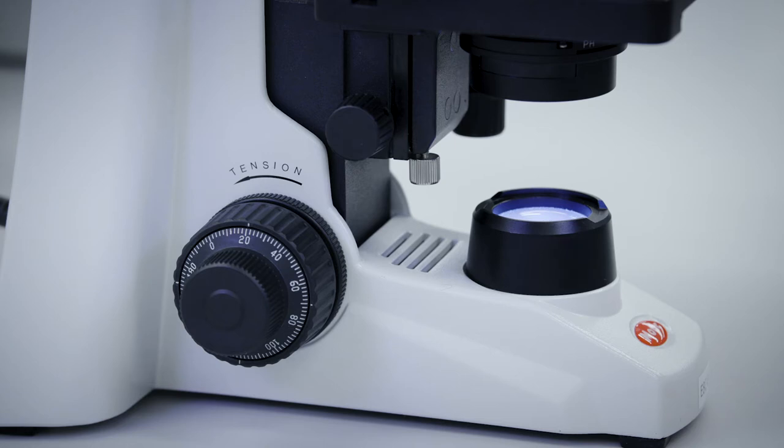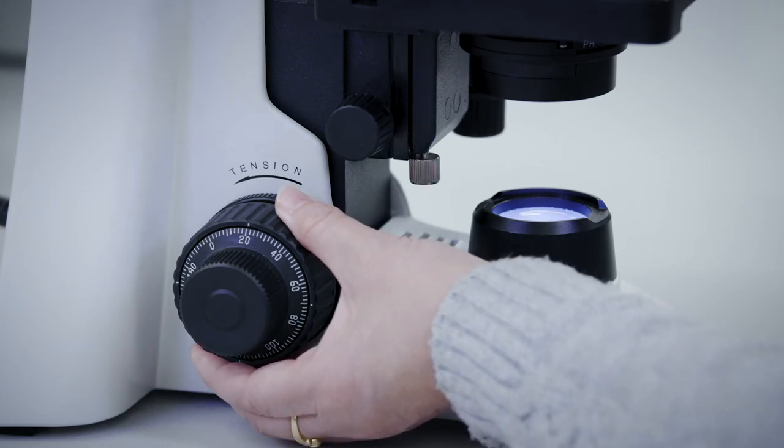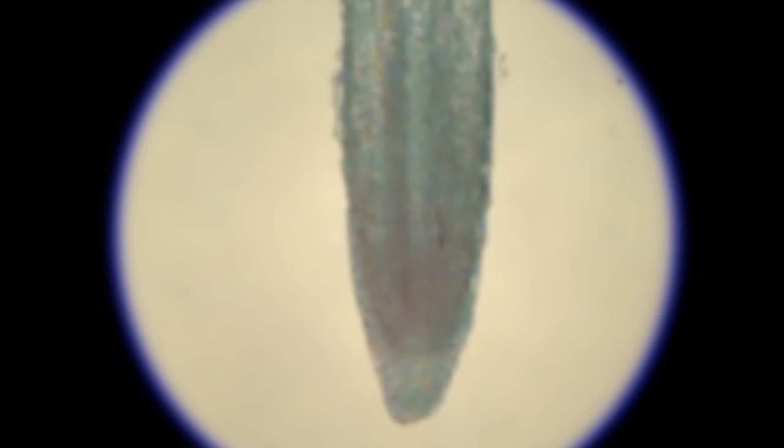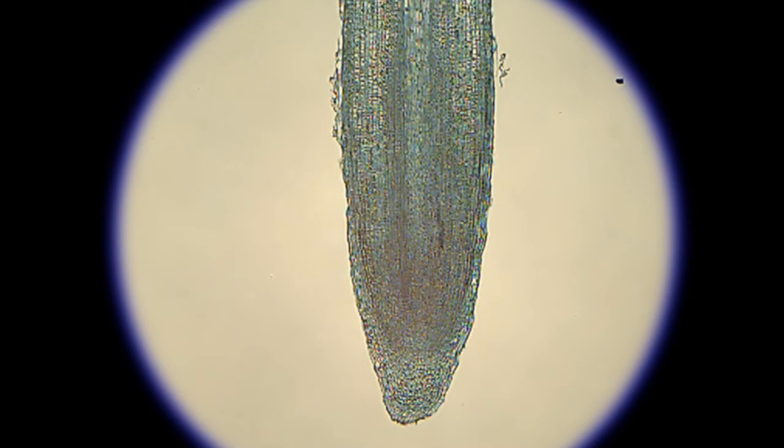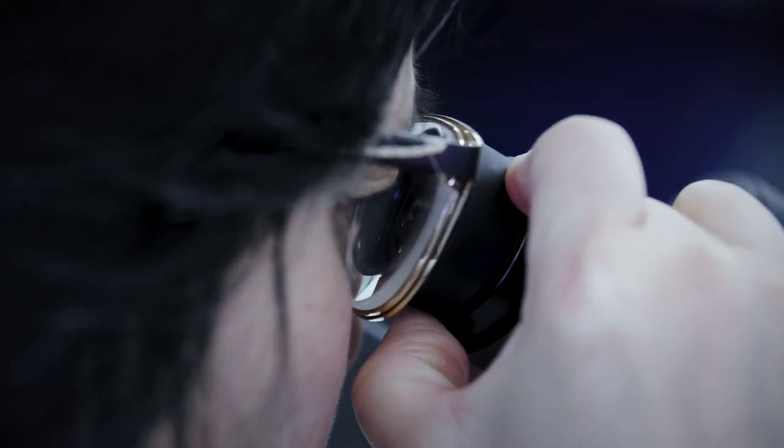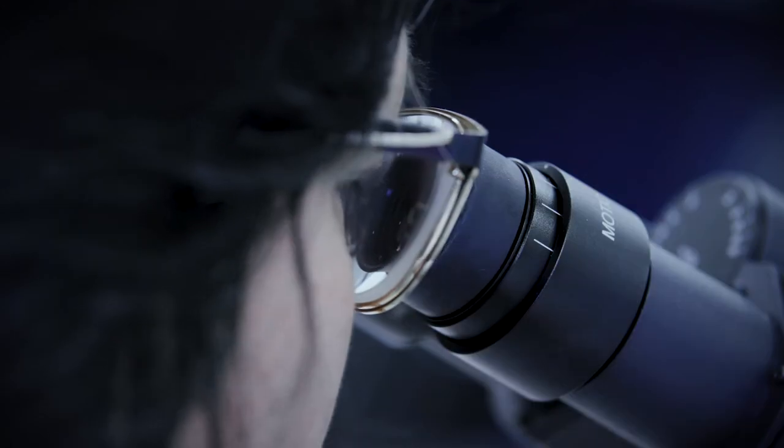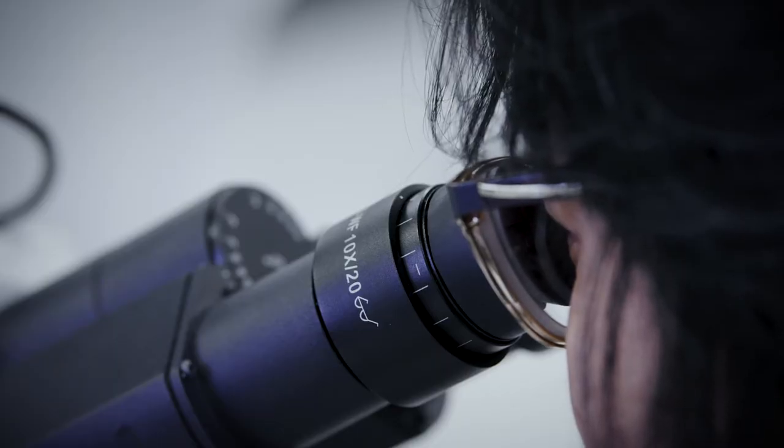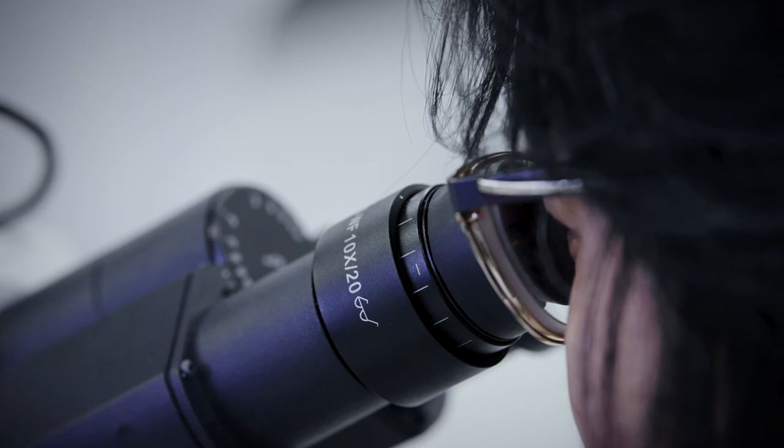Looking down into the oculars, focus the image to the sharpest for your left eye by first rotating the coarse focus knob, then the fine focus knob. Then focus the image for your right eye by turning the ring on the right ocular. By doing this, the difference of focus between your eyes can be compensated.